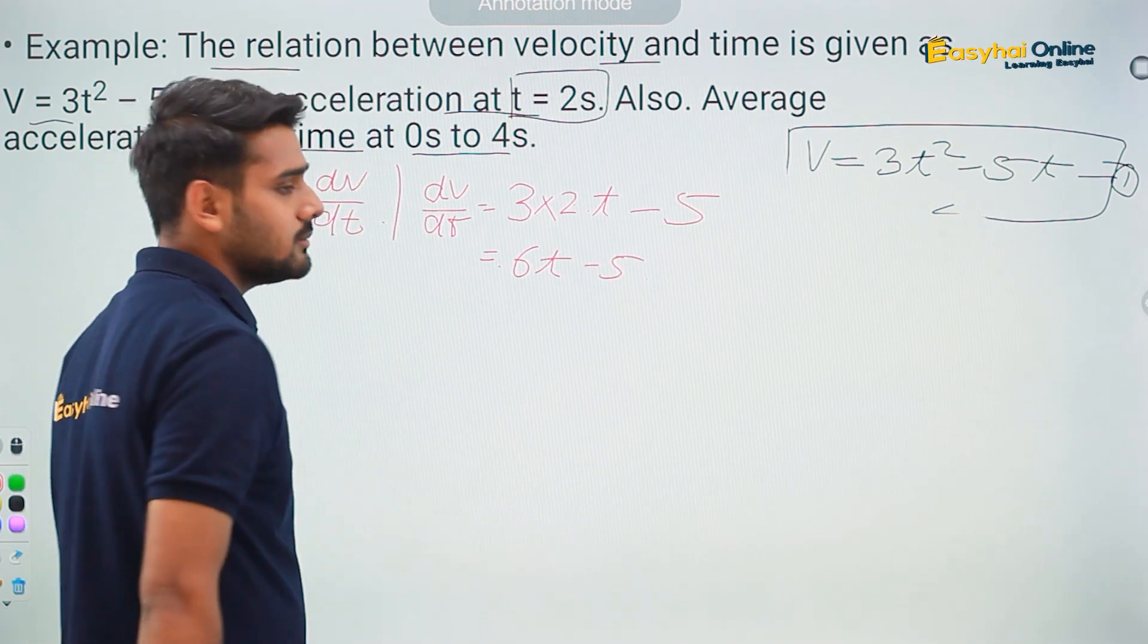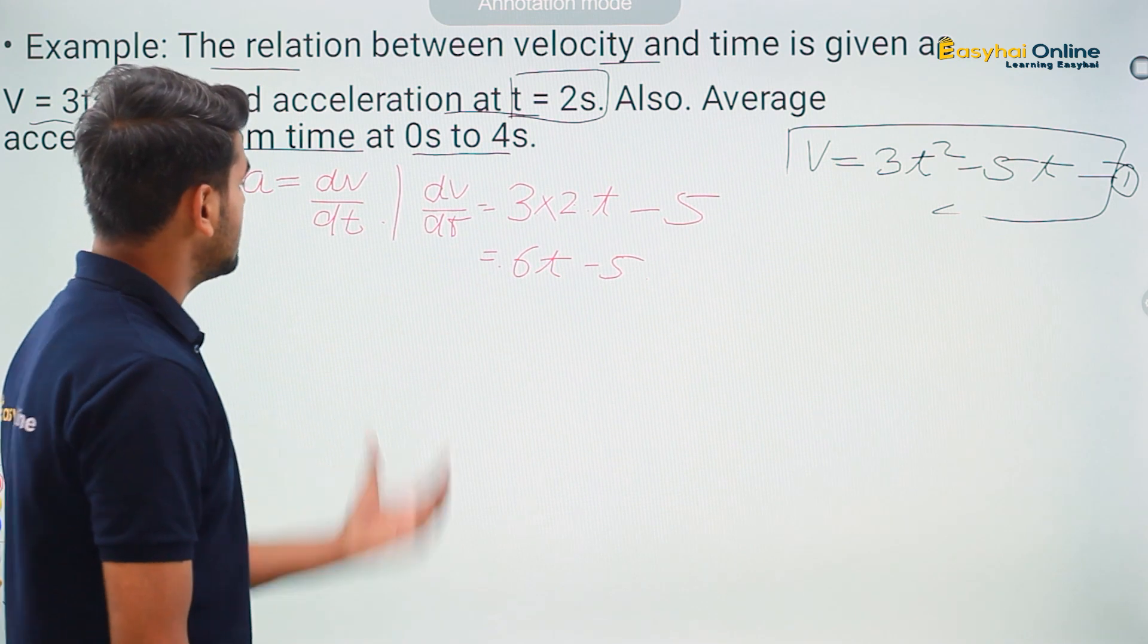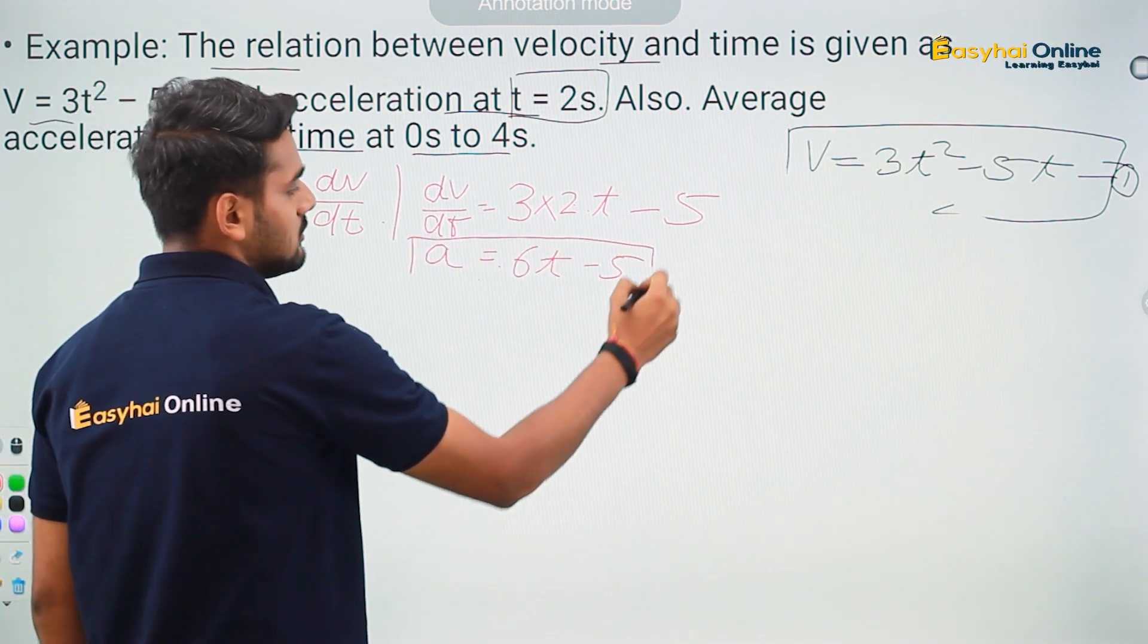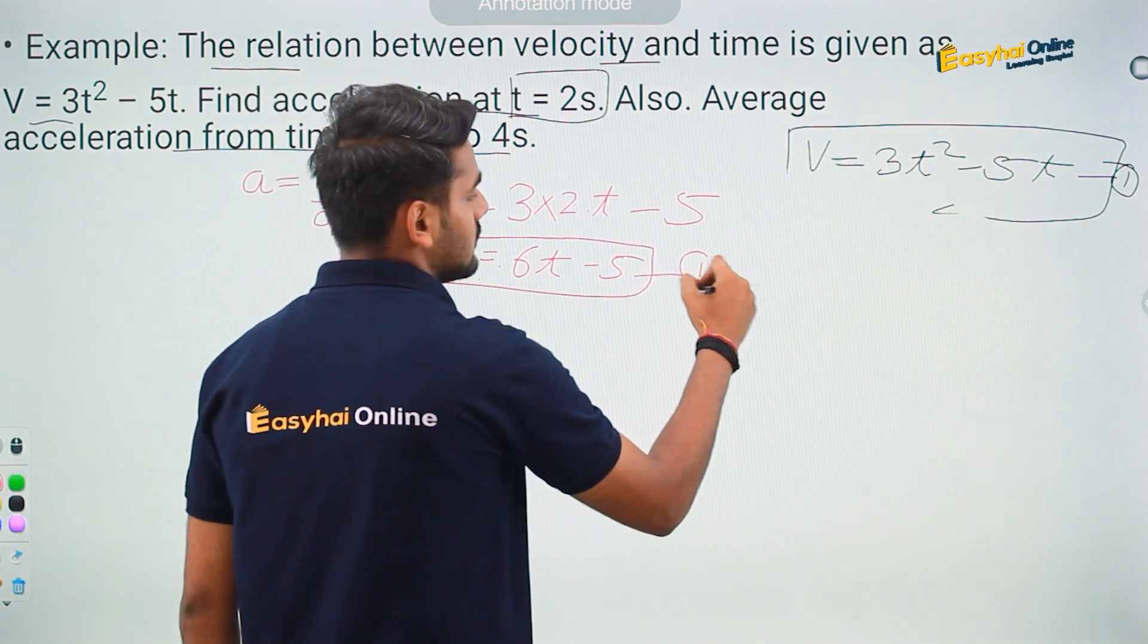What is this 6t minus 5? This is acceleration. Therefore, acceleration a is 6t minus 5. That is your equation 1.